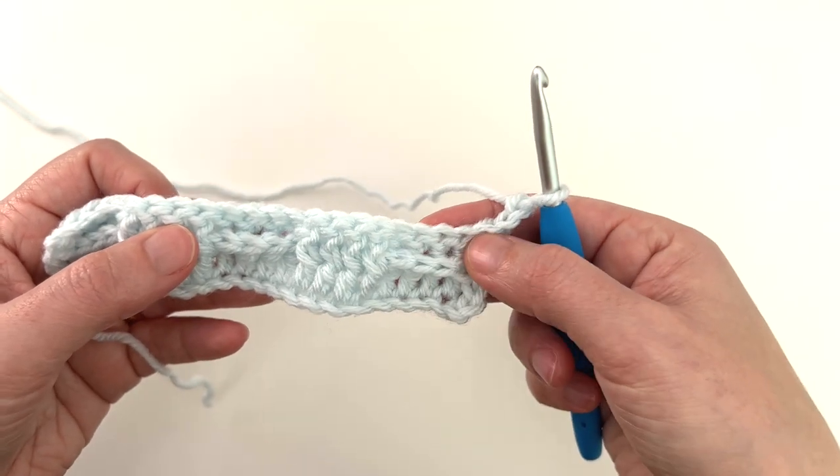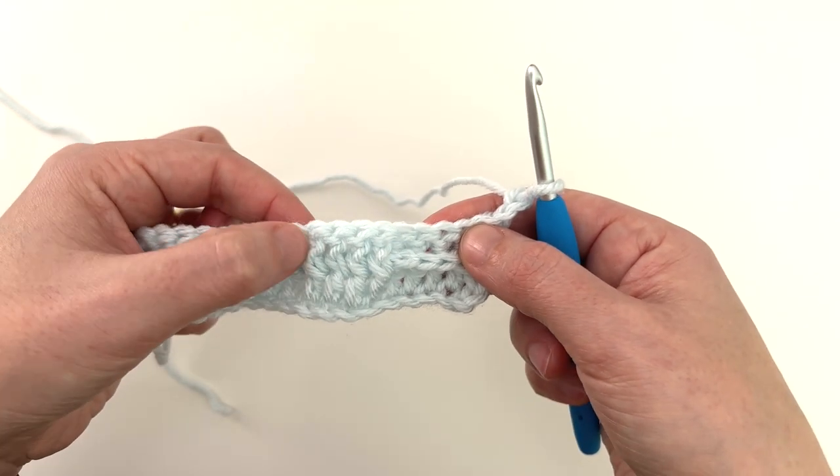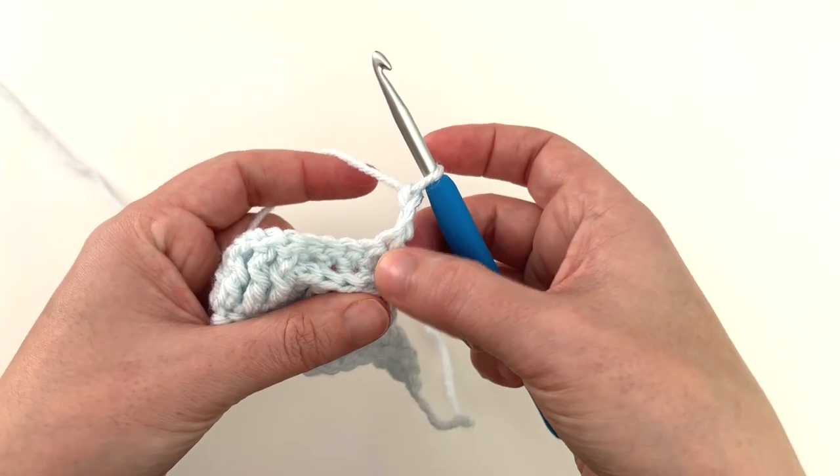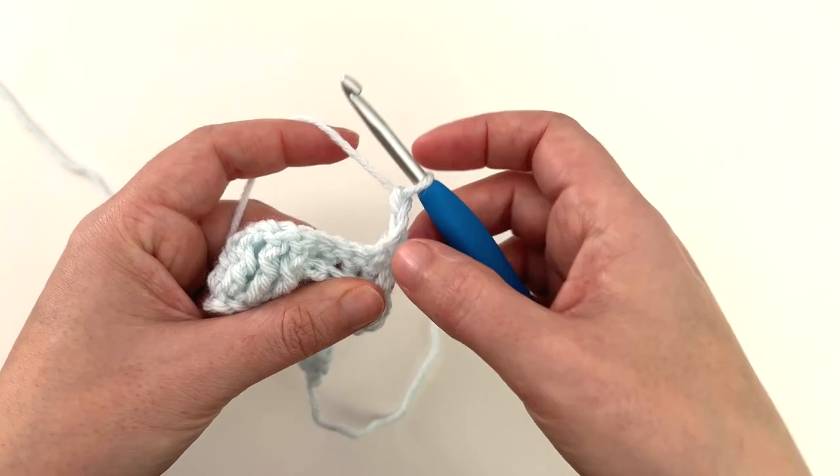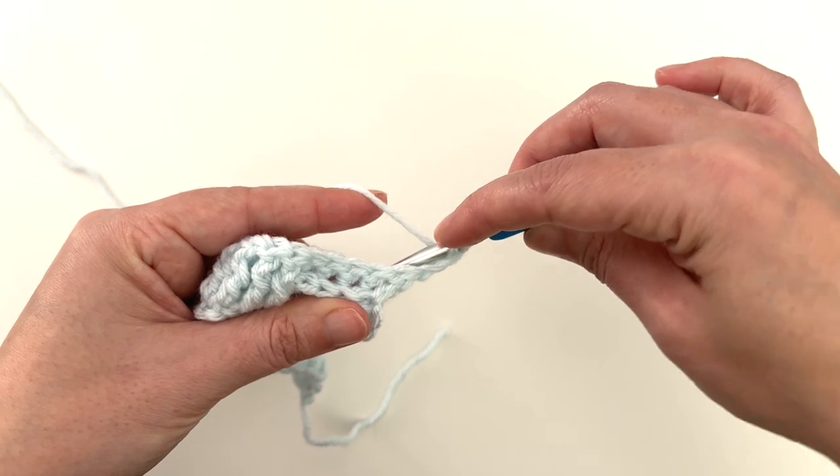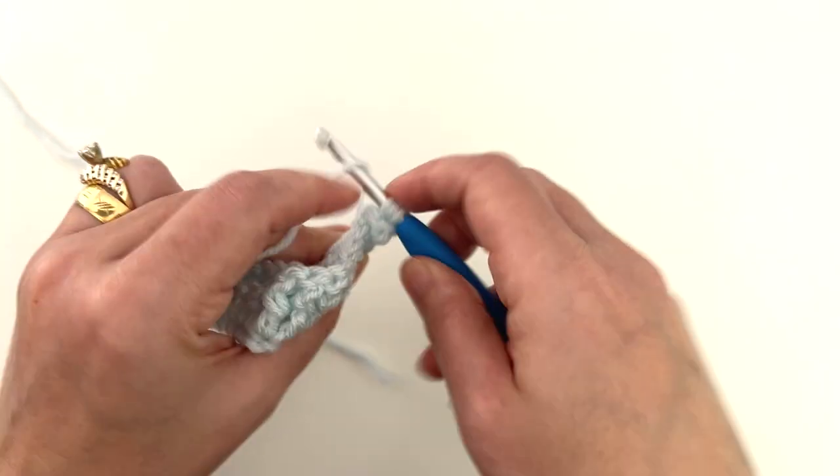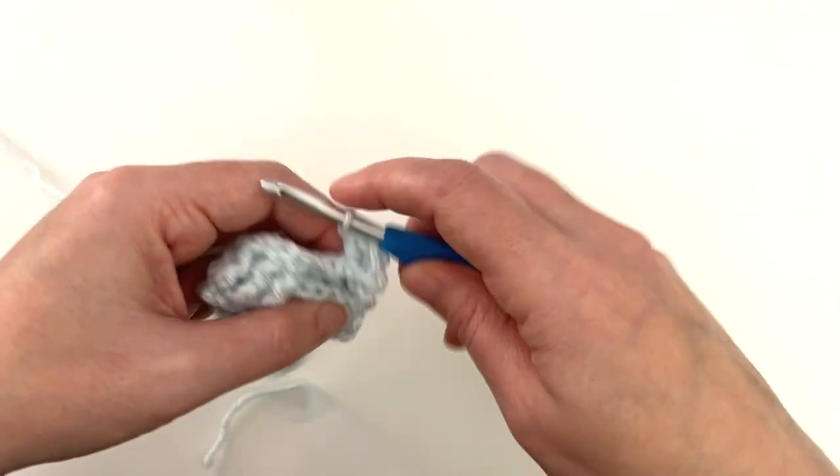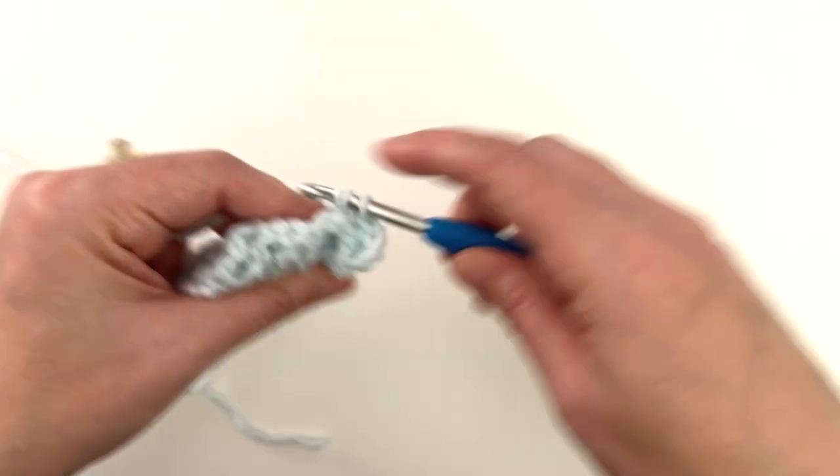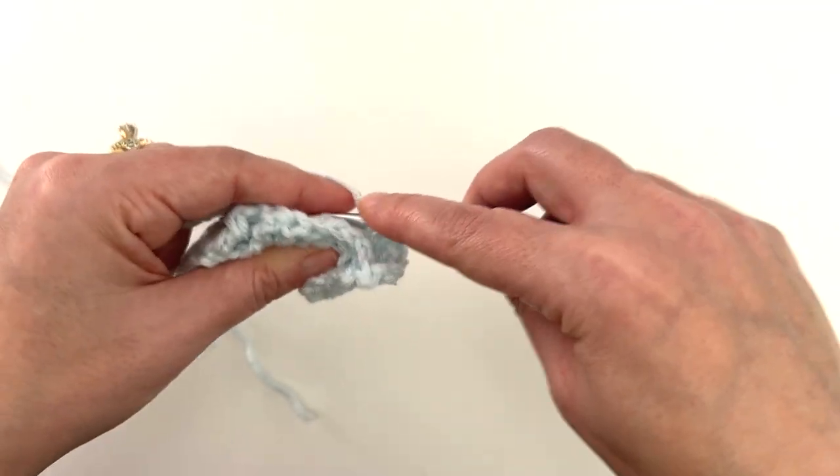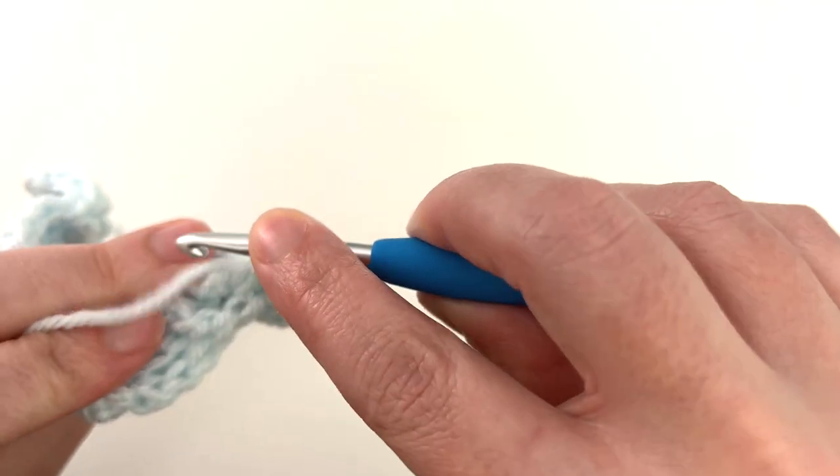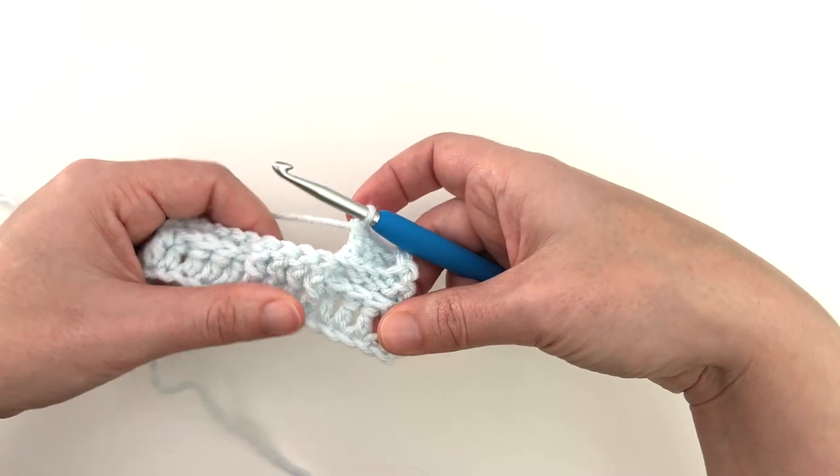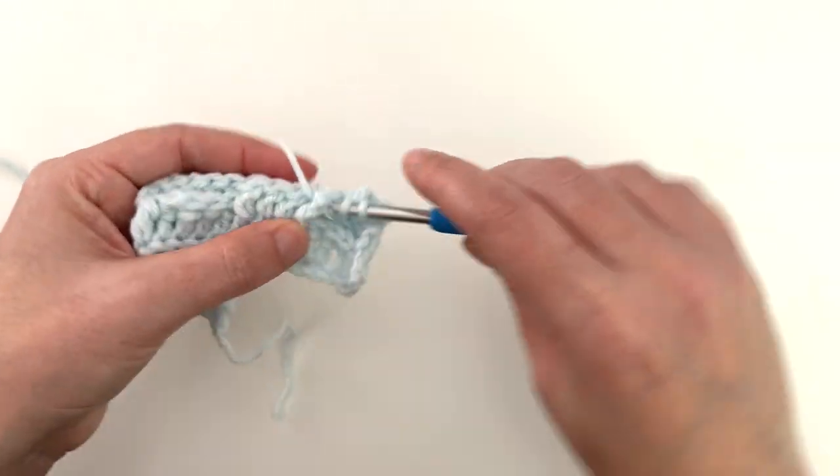So this will be four back posts, four front posts, four back posts, and so on. So again, we're going to ignore this because our turning chain counts. Back posts, back posts, three, and if I can find four.